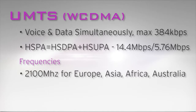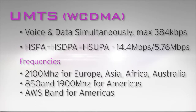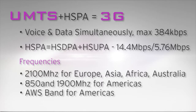A new frequency band has been assigned for UMTS in Europe, Asia, Africa, and Australia: the 2100 MHz band. In the Americas, the existing 2G bands are used for UMTS as well. And later, the AWS band was added in the Americas. UMTS, including the HSPA enhancement, is also referred to as 3G.